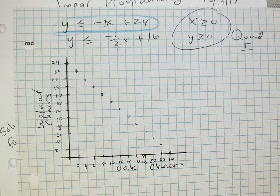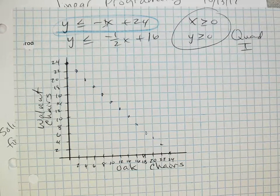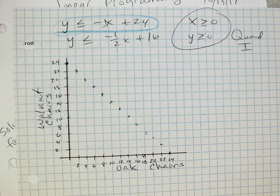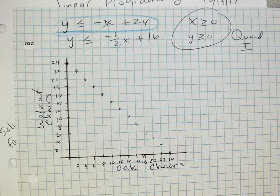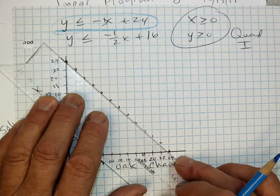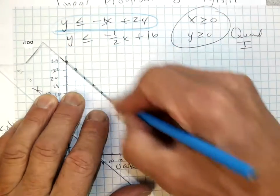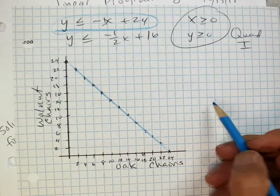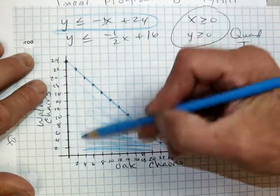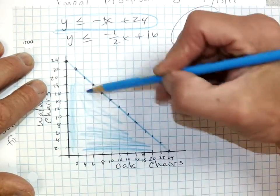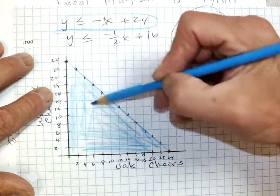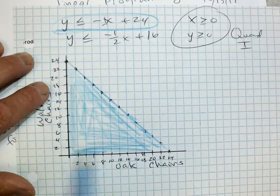So I'm going to start up at 24. I'm going to go down 1 over 1, or down 2 over 2. Same thing. And then I'm going to go ahead and graph that. Let's see. Where's my ruler? I've got a ruler around here somewhere. And graph that in like that. And it's less than, so I should shade it in below. How am I doing? Okay. And of course, I'm only graphing in quadrant 1, because I can't have negative chairs.